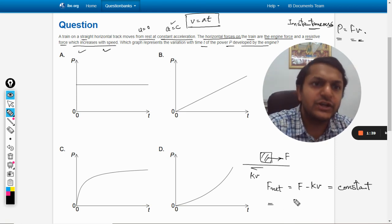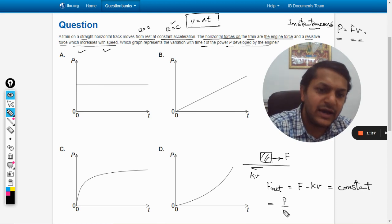From here, I have substituted the value of F as P/v minus kv equals a constant c.